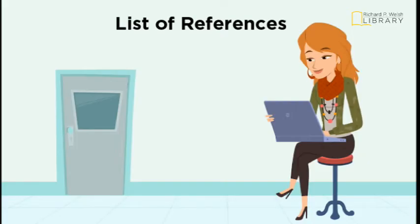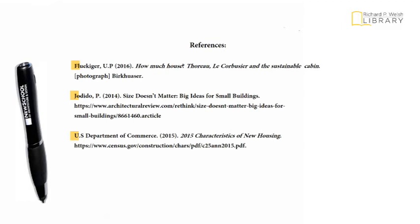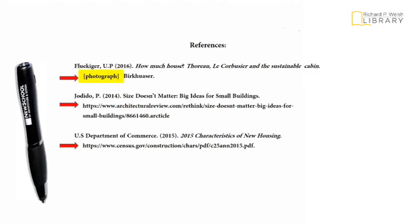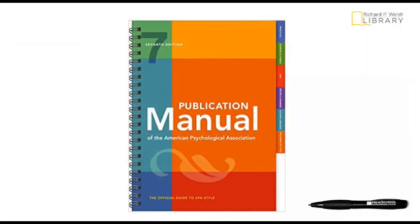Your list of references must include all images, graphs, tables, and charts that you include in your paper. As with text resources, they are organized alphabetically by the creator's last name. They are distinguished from written resources by including the type of resource in square brackets — for example, bracket, photograph. Apart from this additional piece, figures follow conventions for resources. You can refer to the APA guide or many online sources for specific details.